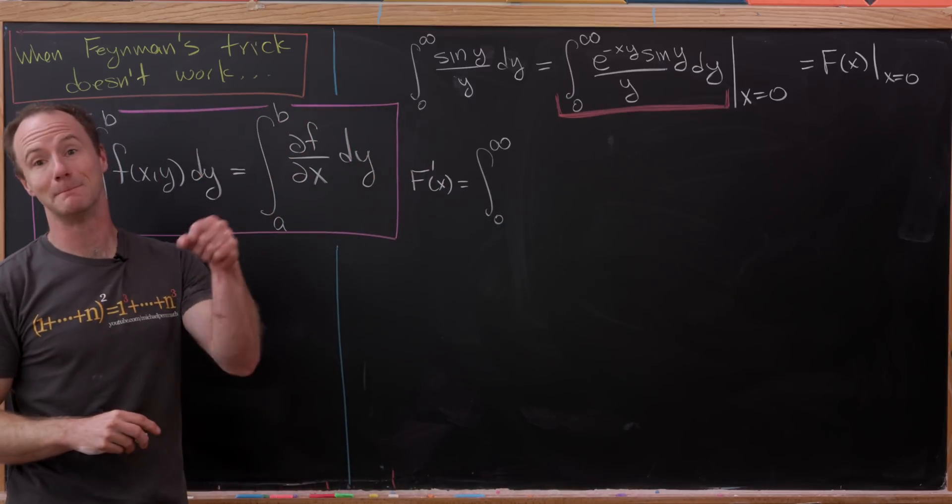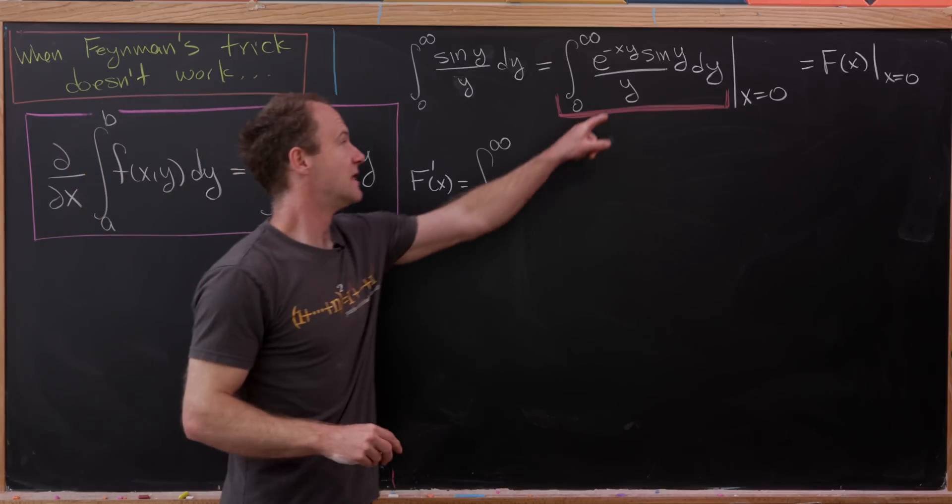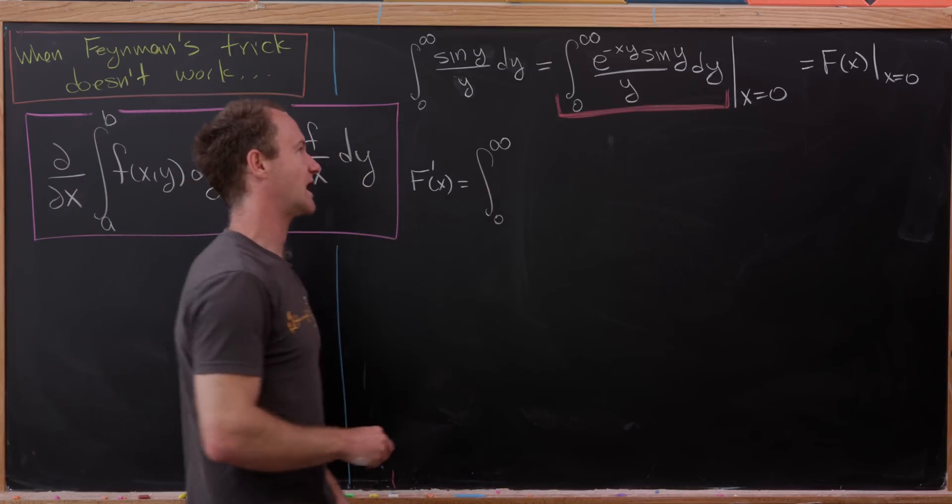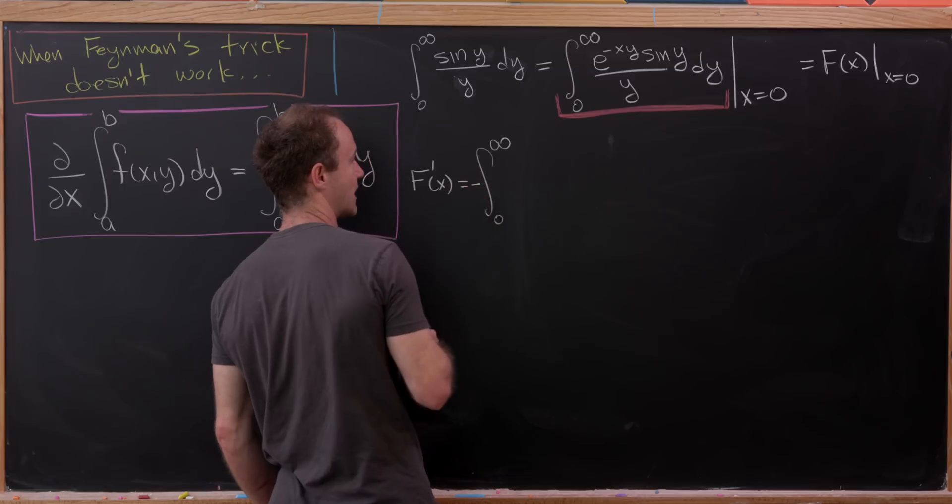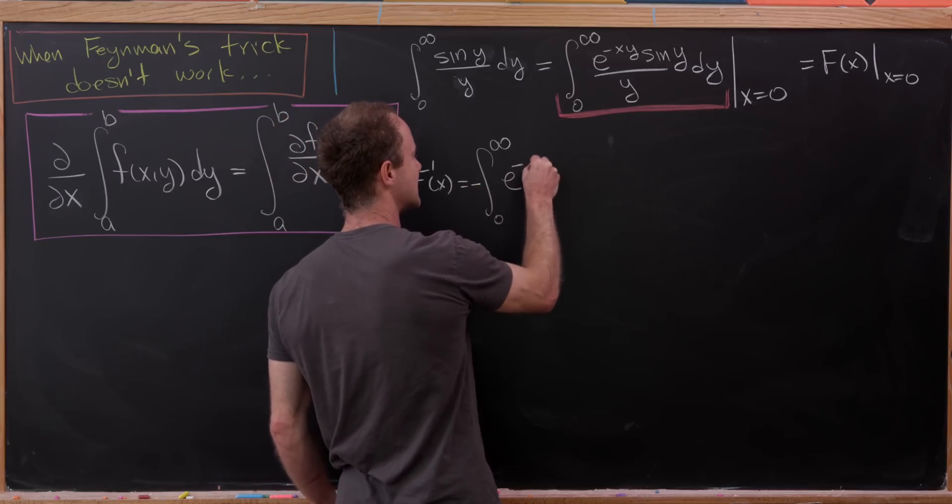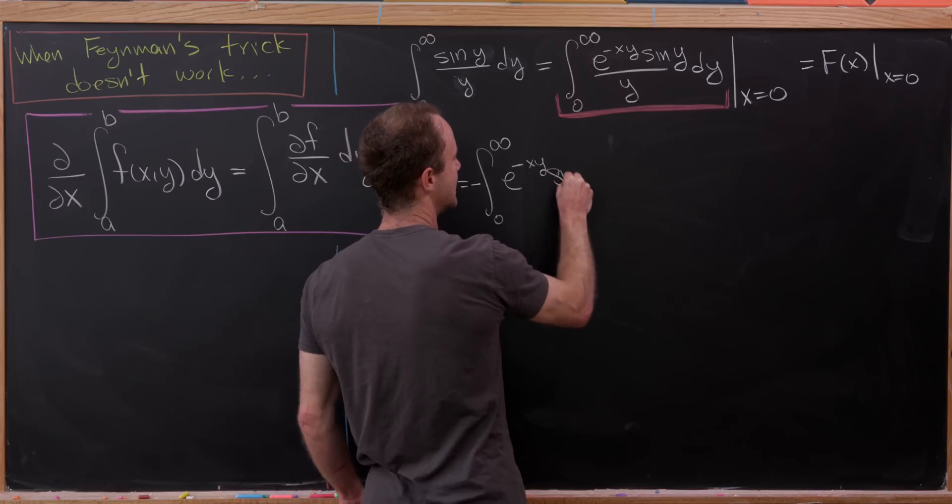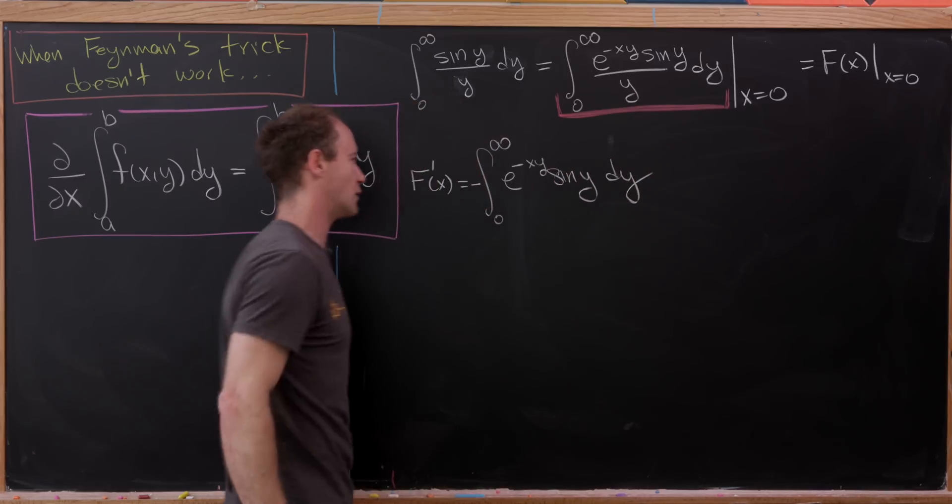Taking the derivative of e to the minus xy with respect to x, we'll have a minus y pop out. That minus y will cancel this y in the denominator, leaving us with a minus sign, which I'll bring up front, and then e to the minus xy times sine of y dy.